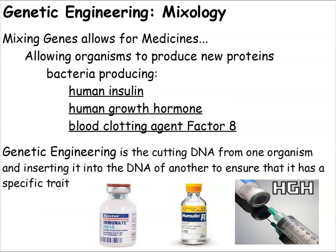Why do we want to do this? One reason is we can cause bacteria to create medicines. It allows organisms to produce new proteins, and some of those proteins are medicines. For example, human insulin — we can take the human insulin gene from a human, insert it into a bacteria, and now the bacteria is making human insulin. We could also do human growth hormone or a blood clotting factor. Genetic engineering is where we take DNA from one organism and insert it into another, so that other organism creates the same protein and expresses the same trait.